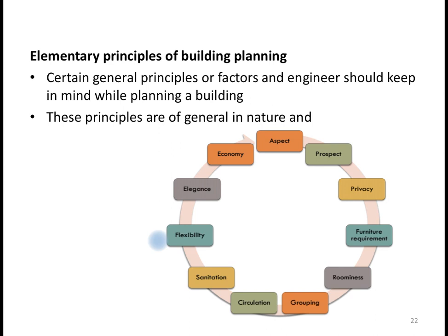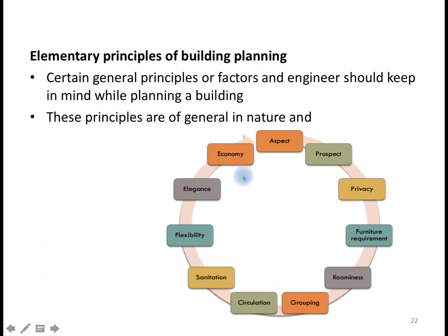The availability of materials and different methods also needs to be considered during construction. In this background, the parameters we are supposed to consider are called the Principles of Building Planning, and they include 11 main aspects: aspect, prospect, privacy, furniture requirement, roominess, grouping, circulation, sanitation, flexibility, elegance, and economy. These are the 11 general principles we have to follow while considering building planning.